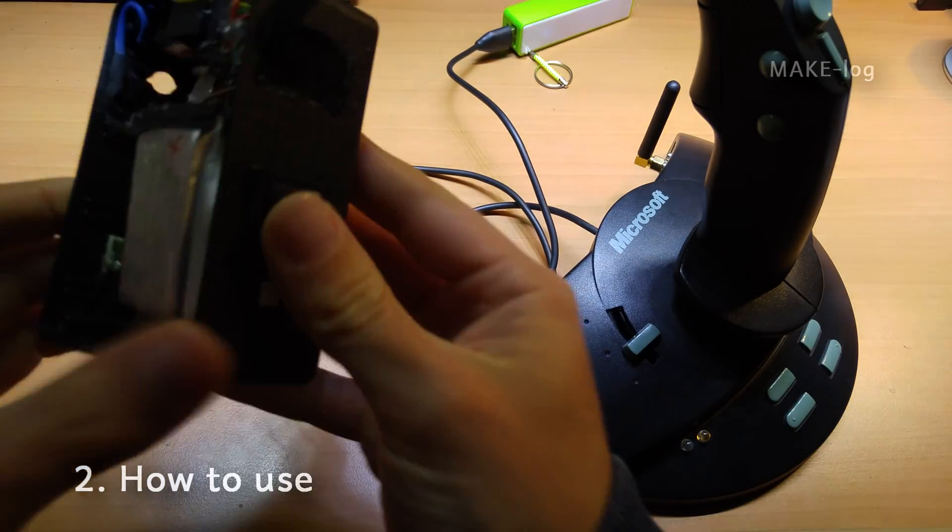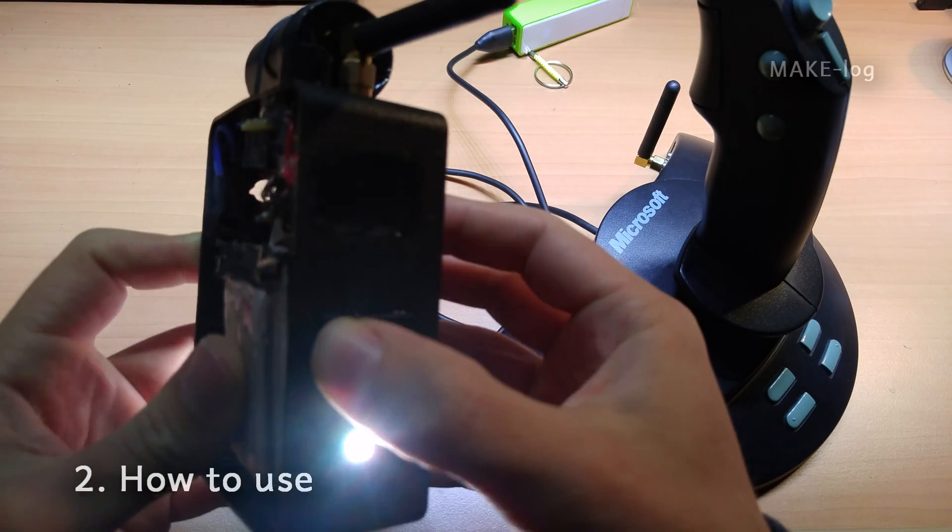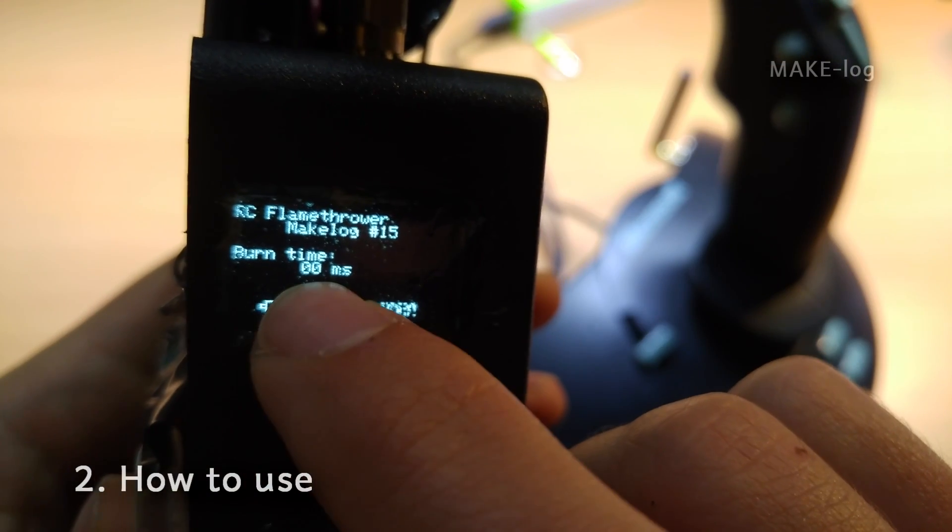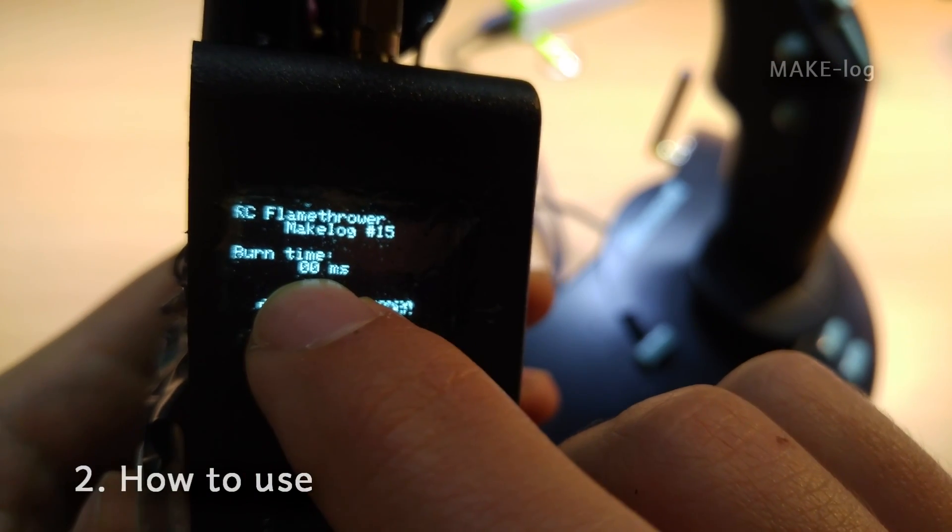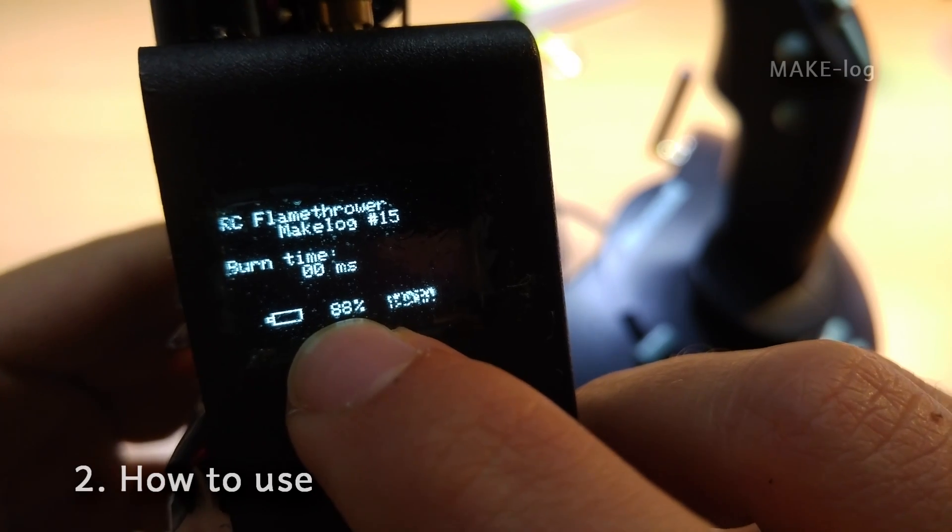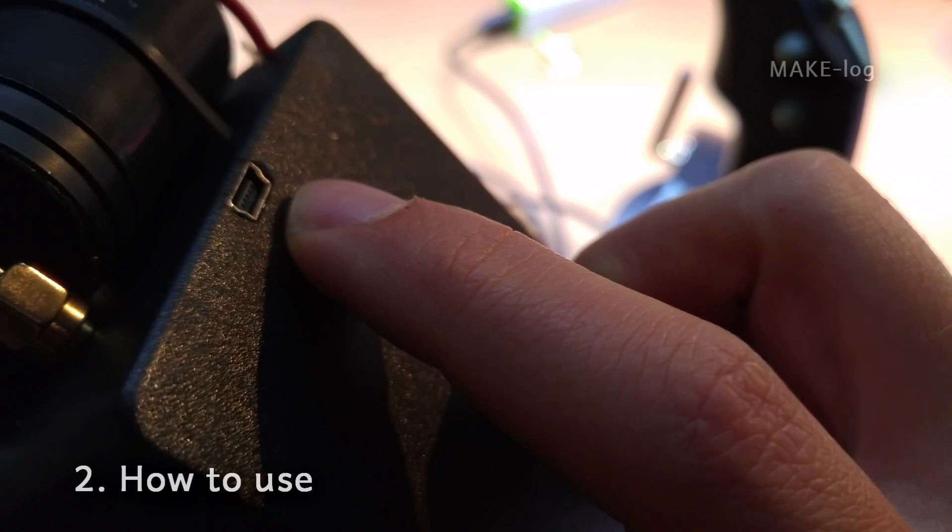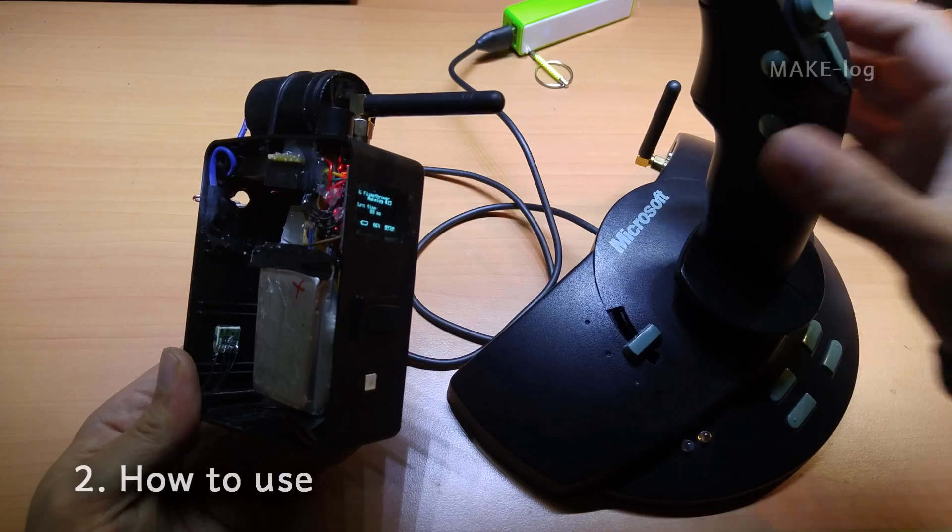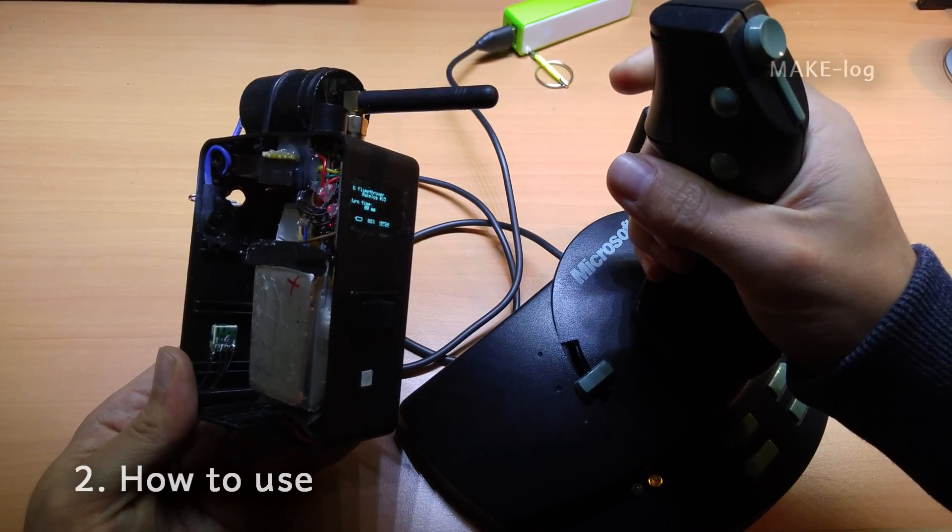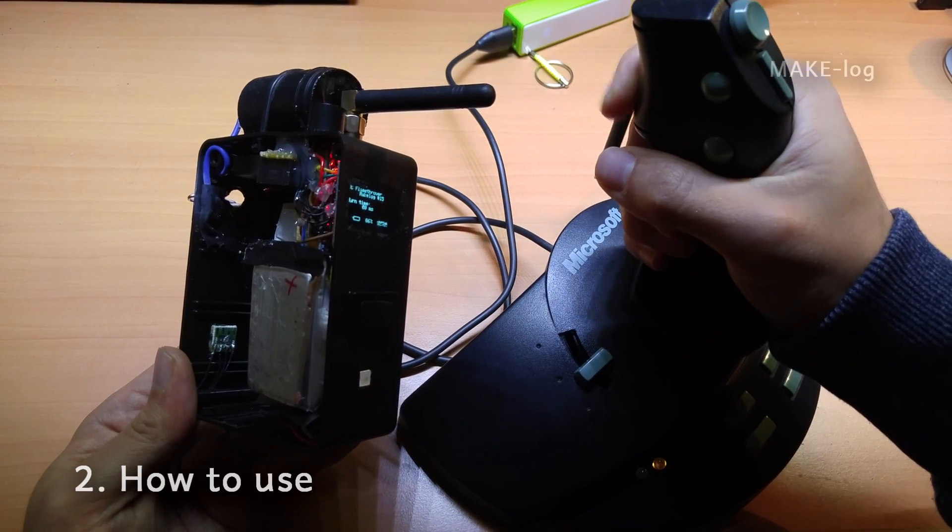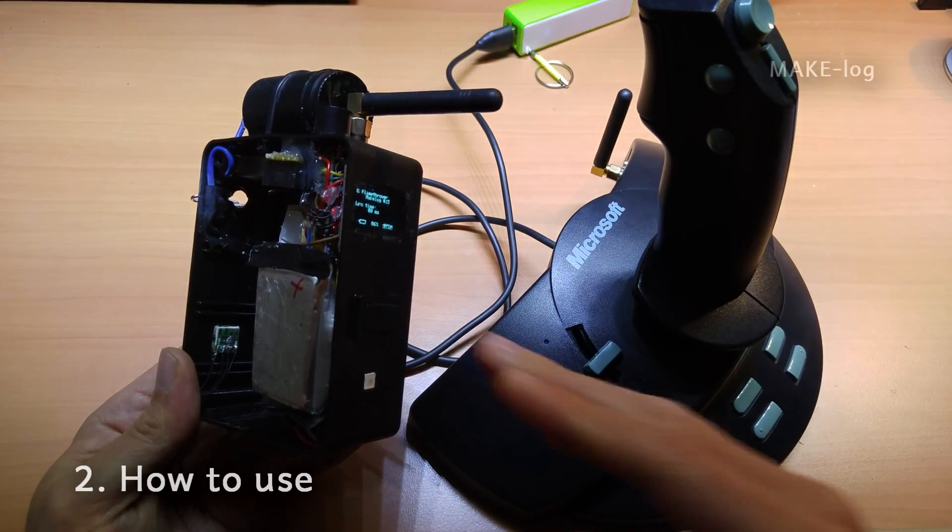Next we switch the radio control flamethrower on. The display indicates the burn time, so you know how long a spray can is lasting. This is the battery indicator, so you know if you can use the flamethrower again or if you need to charge it via micro USB here. This is the fire button, but it has no effect, because by default the flamethrower starts in safe mode.